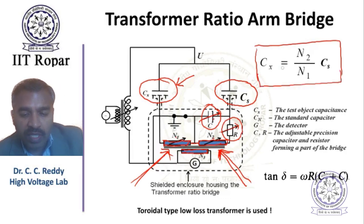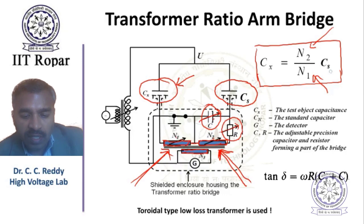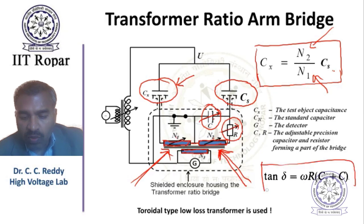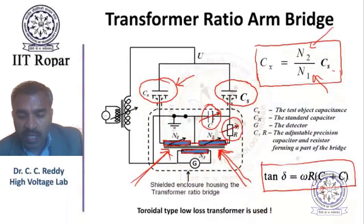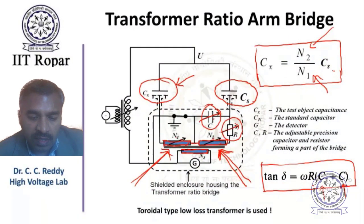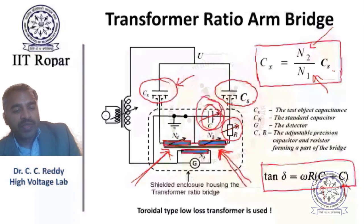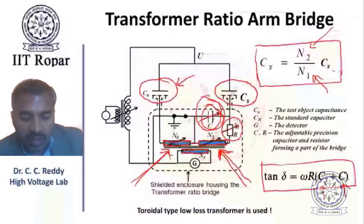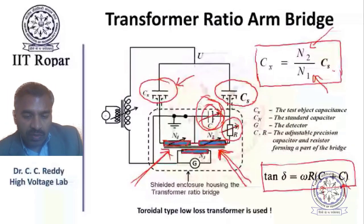N2/N1 is the turns ratio achieved at balance, and Cs is the standard capacitor. Similarly, tan delta can be shown to be ω×R×Cs, where C is the variable capacitor in the lower bridge section. The balance condition and its derivation are shown. At balance, the detector G should indicate zero.